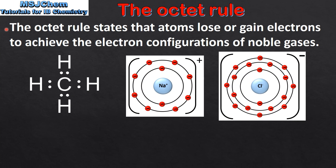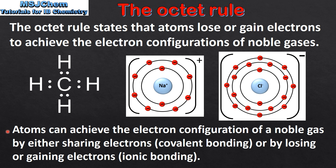The octet rule states that atoms lose or gain electrons to achieve the electron configurations of noble gases. The noble gases are stable because they have full outer energy levels. Atoms can achieve the electron configuration of a noble gas by either sharing electrons, as in covalent bonding, or by losing or gaining electrons, as in ionic bonding.